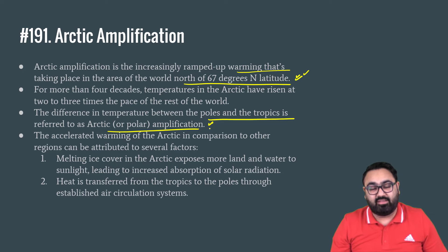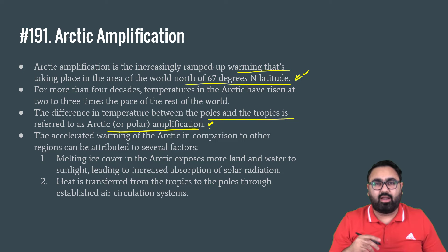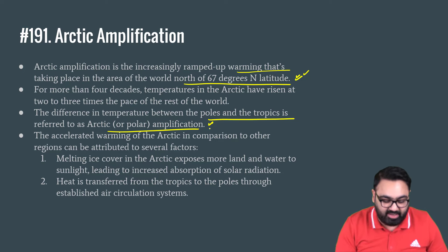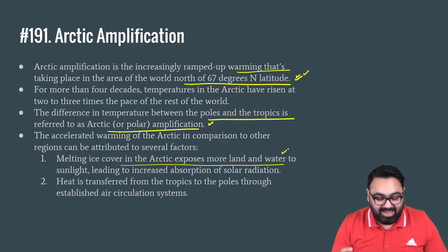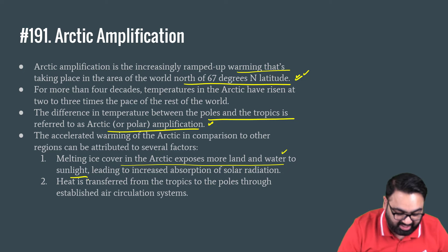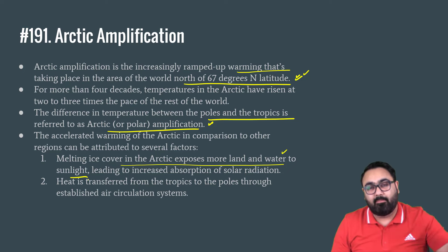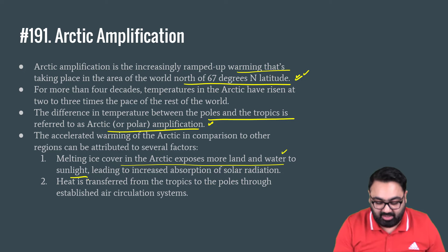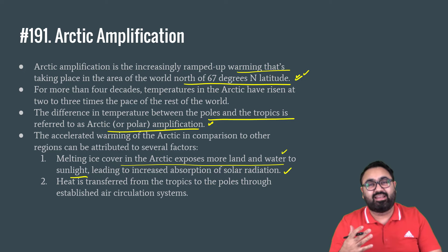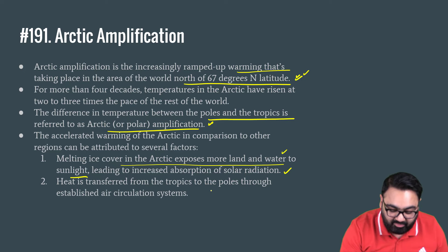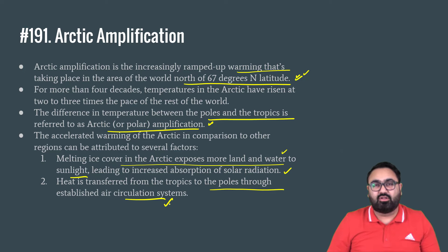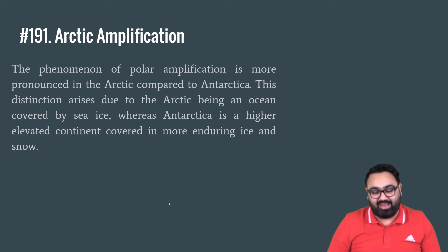Now why is this happening? There are a lot of reasons, with global warming obviously being one of them. But looking at exact causes: the melting ice cover in the Arctic means much more land and water is getting exposed to sunlight, so many more solar radiations are being absorbed, thus accentuating the entire impact of temperature. Heat is also transferred from the tropics to the poles via air circulation systems, further leading to increased Arctic amplification.